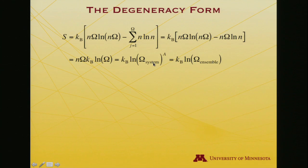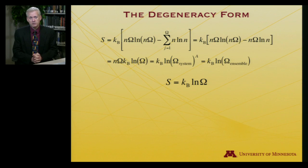So it's like log of omega for a system to the A power. And what does that mean? The degeneracy of a system times all the systems in the ensemble, the product of all the degeneracies is the degeneracy of the ensemble. And so I've ended up transforming to entropy is k log degeneracy for the ensemble.